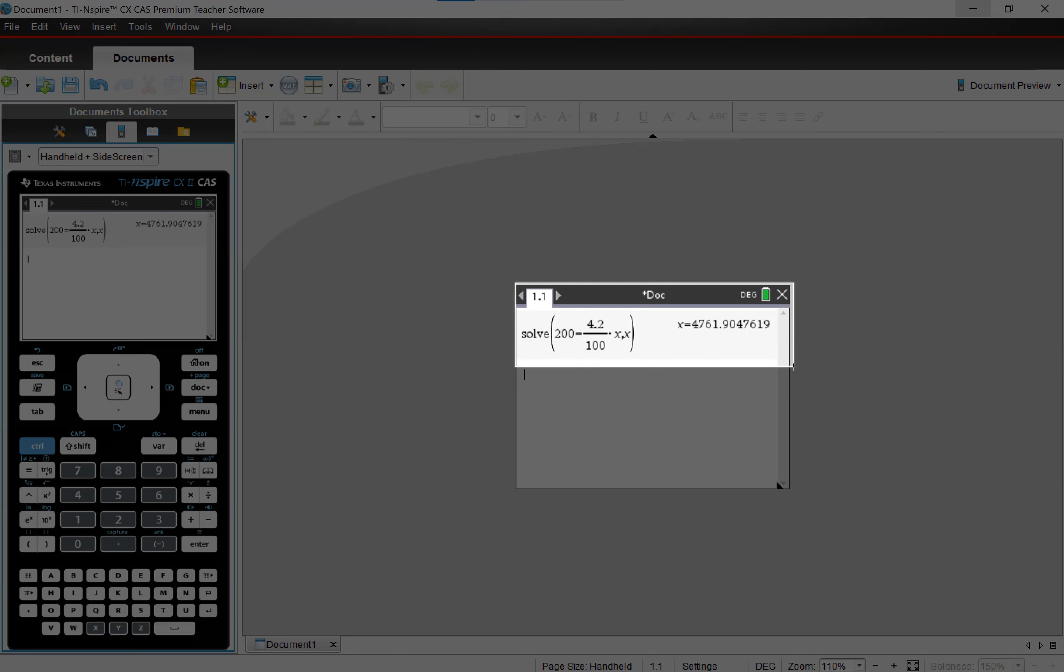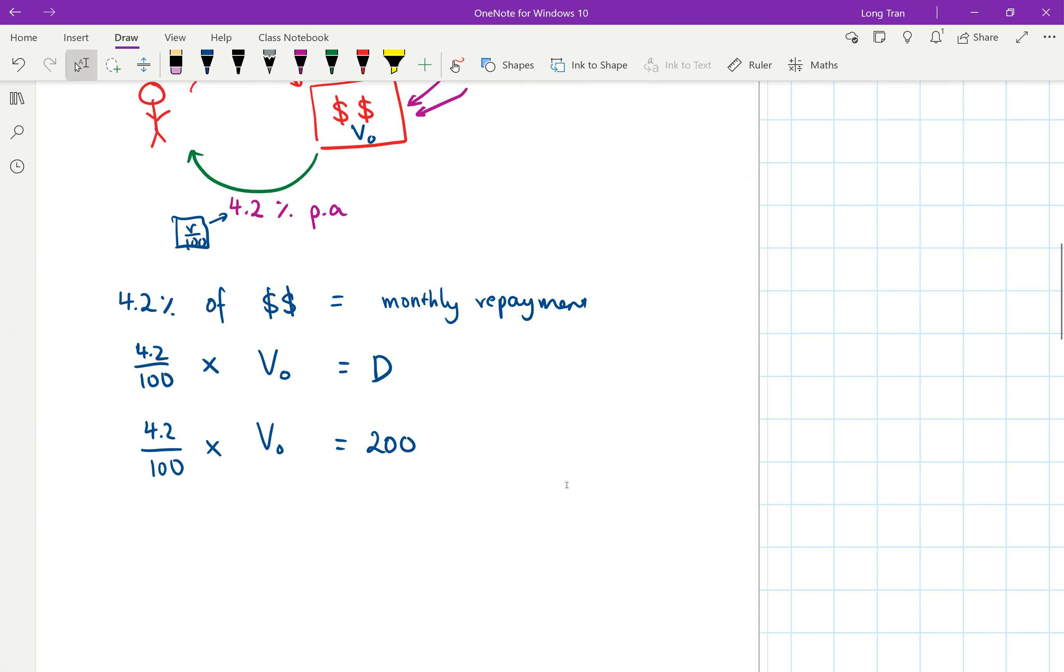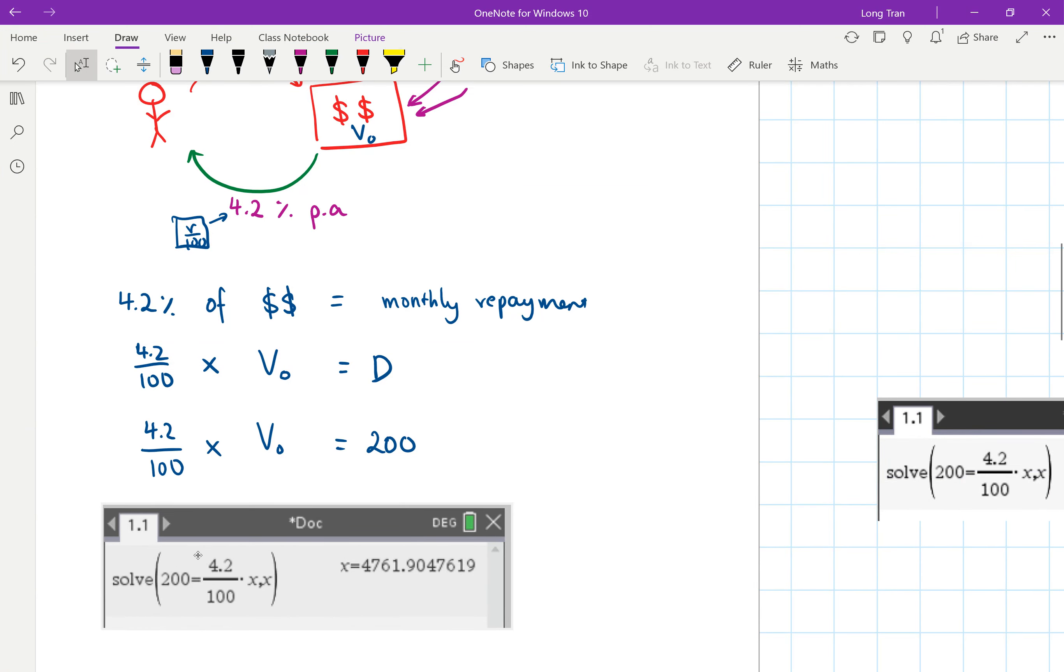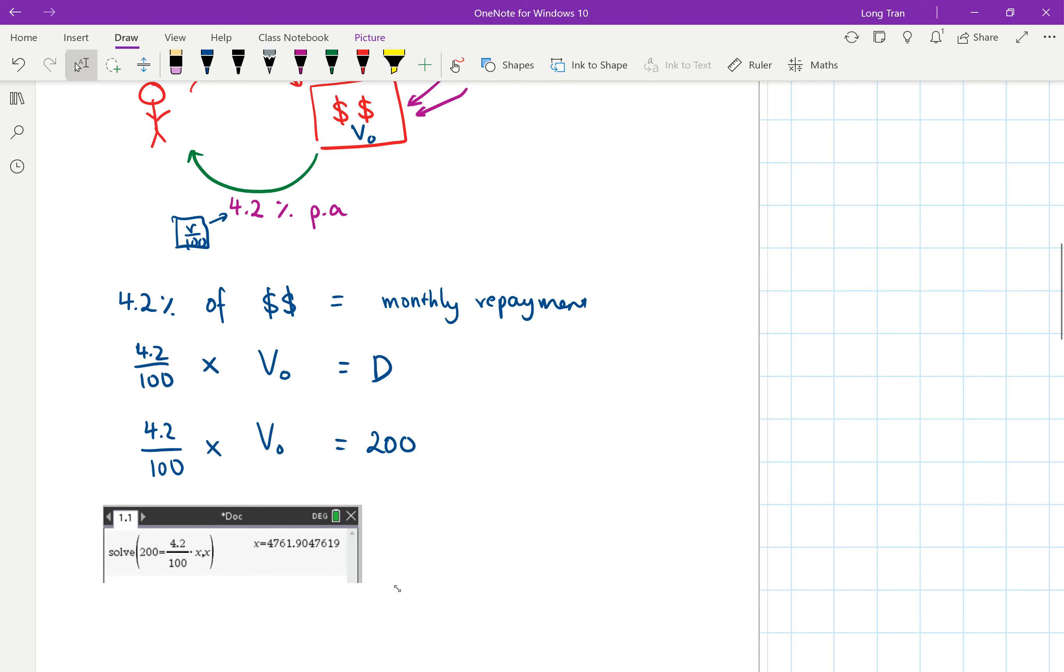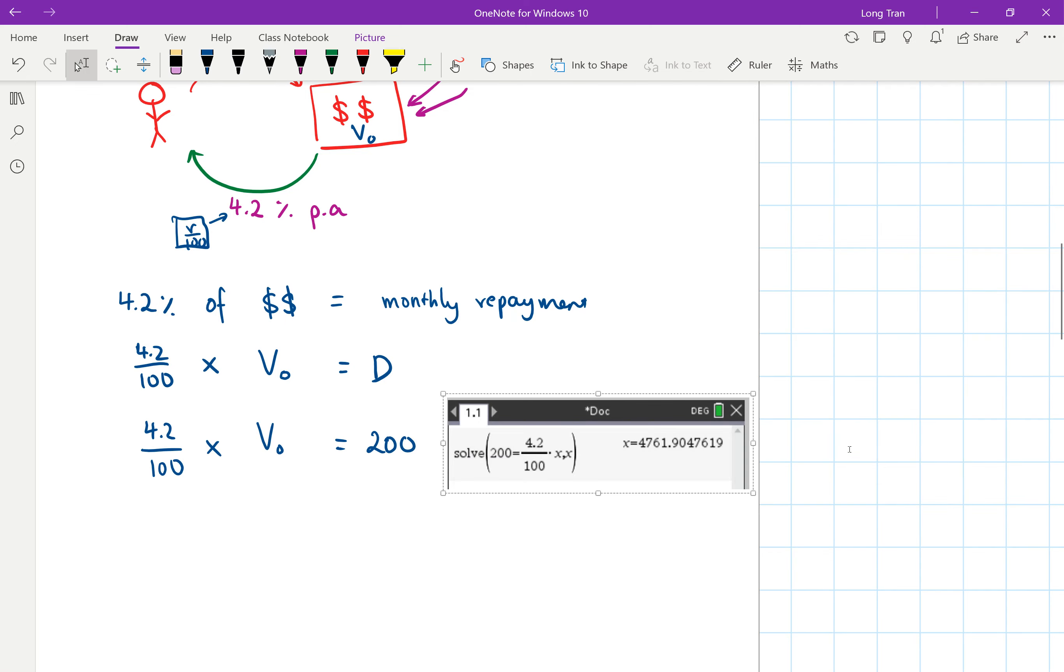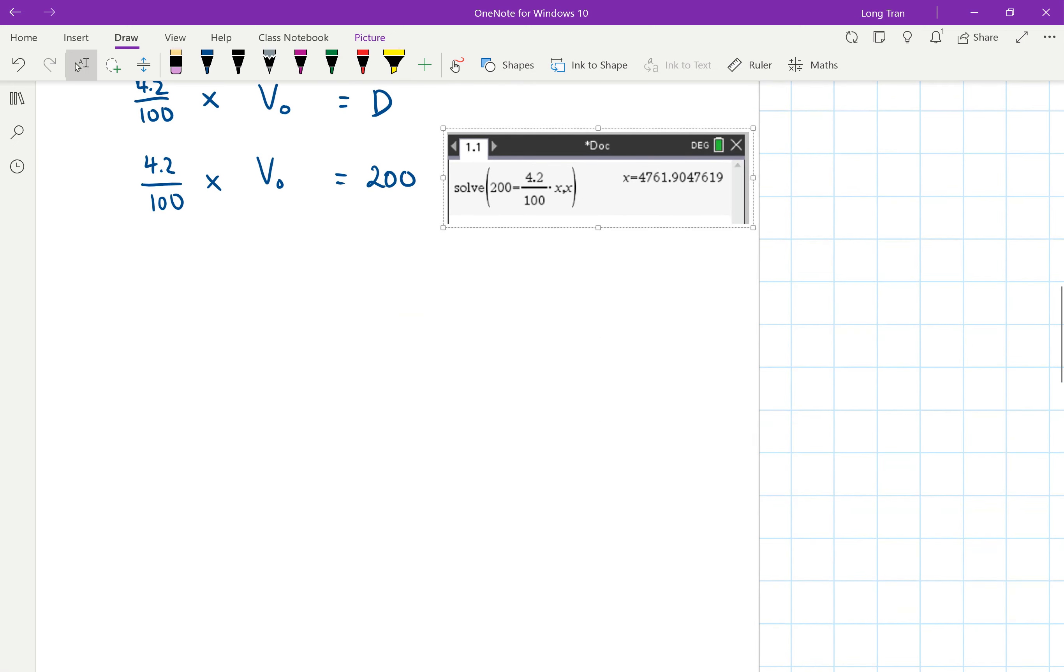If you wanted 4.2%, if you wanted $200 for payments, that's what you can do here. So I'm just going to put my calculator solutions here on the side. But you could have worked it out by hand as well. You could have done V₀ is equal to 200 multiplied to 100 and then divide that by 4.2, and you'd also get the same answer.